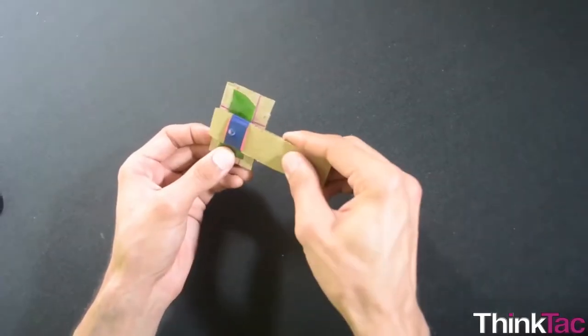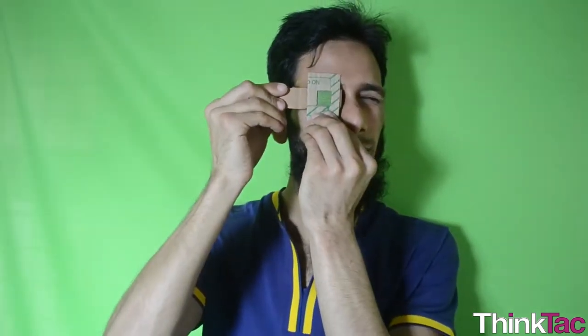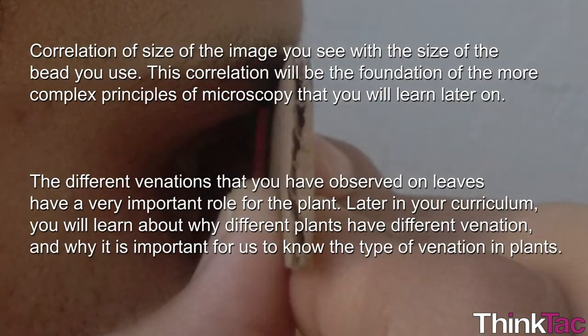Once you have assembled the microscope and observed leaf venations with it, you have reached a stage where you can observe many other flat objects with the same microscope. By doing this, you will understand the correlation of the size of the image you see with the size of the bead you use. This correlation will be the foundation of the more complex principles of microscopy that you will learn later on.